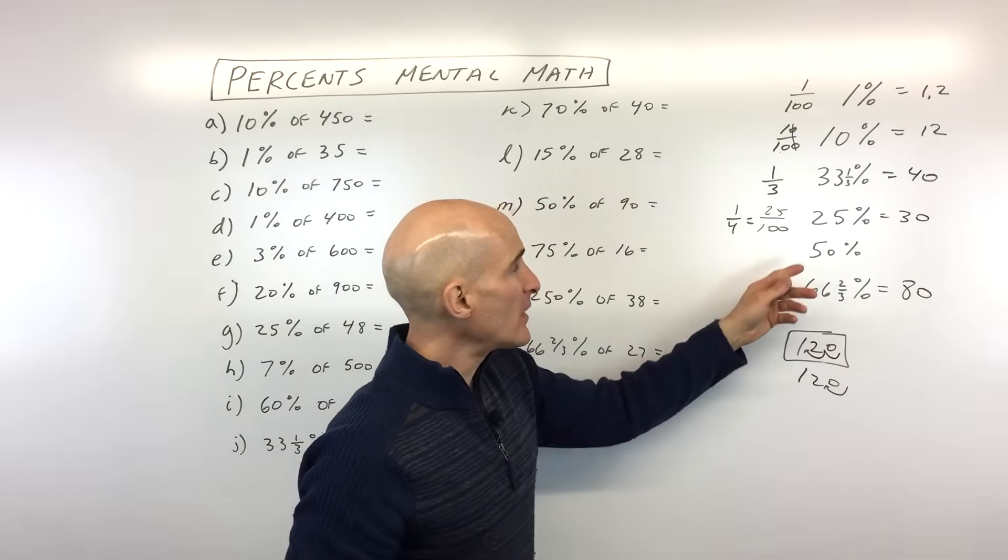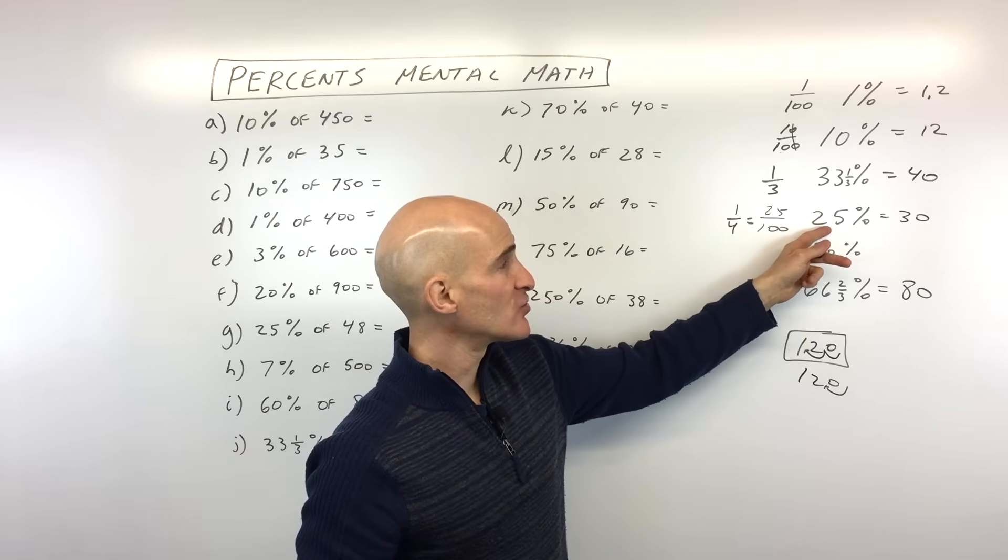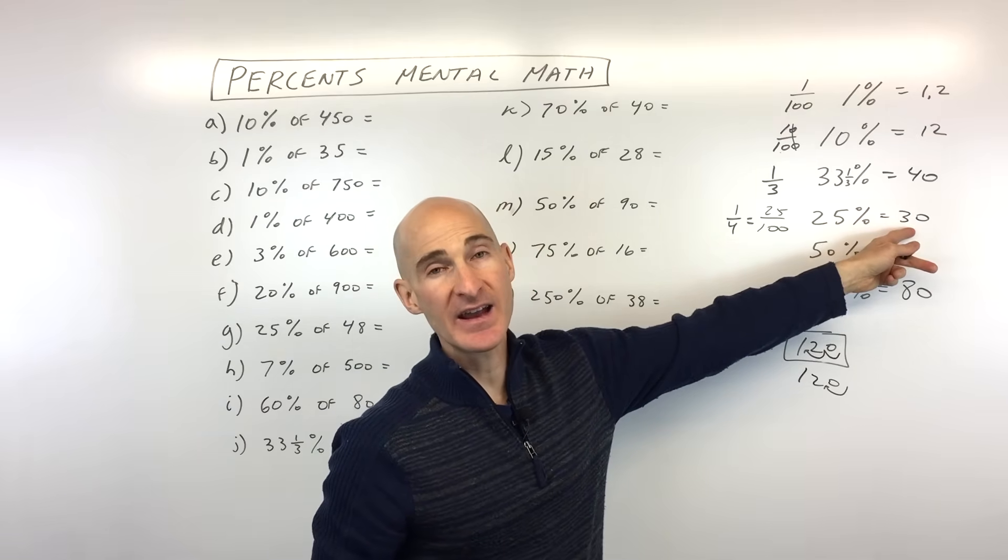Now, if you wanted to find 75%, that's three times 25%. That's triple this. We would triple this. It would be 90, right?